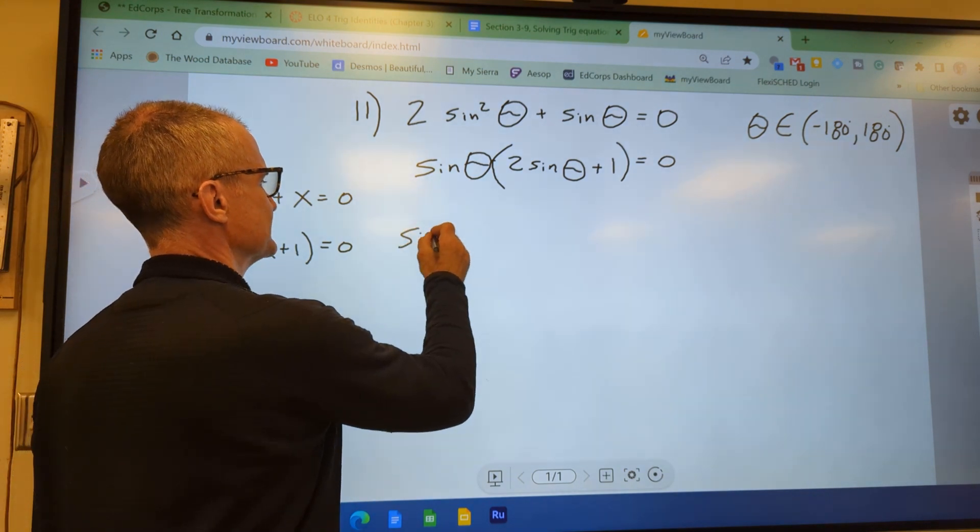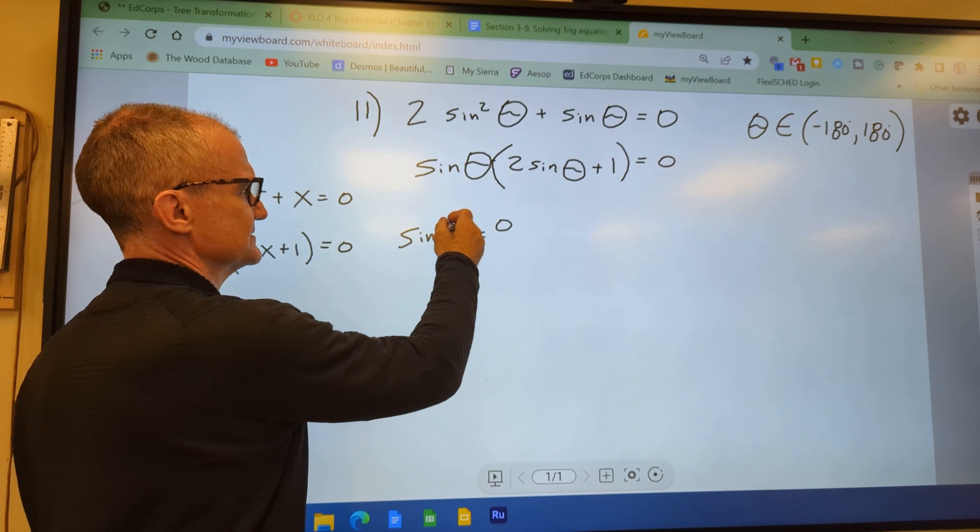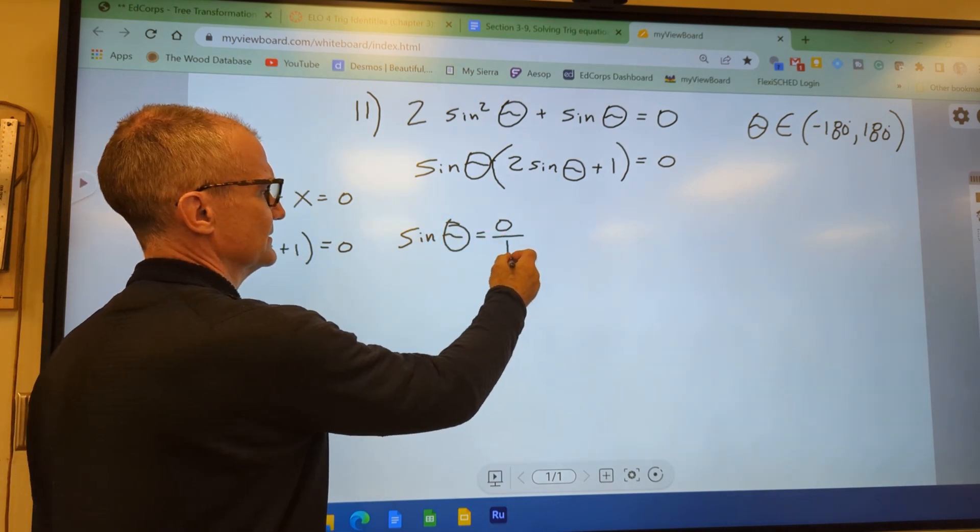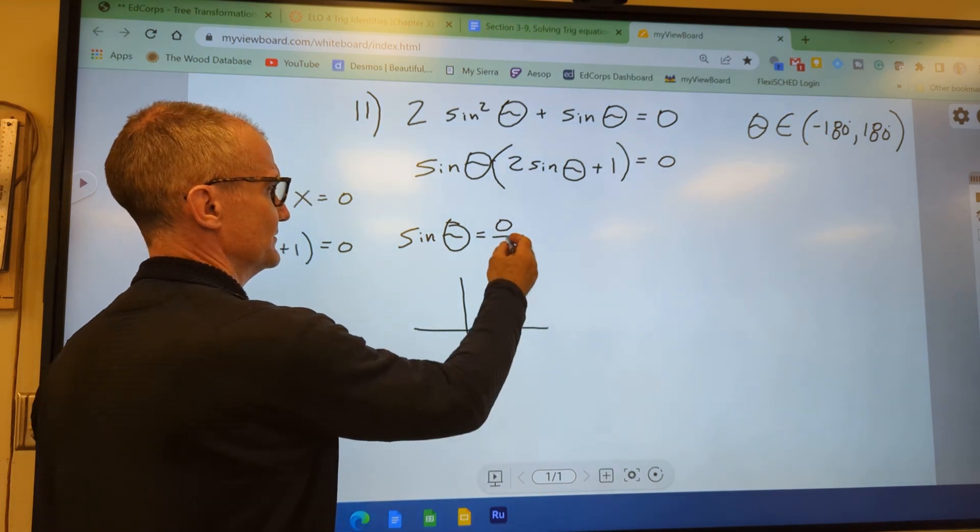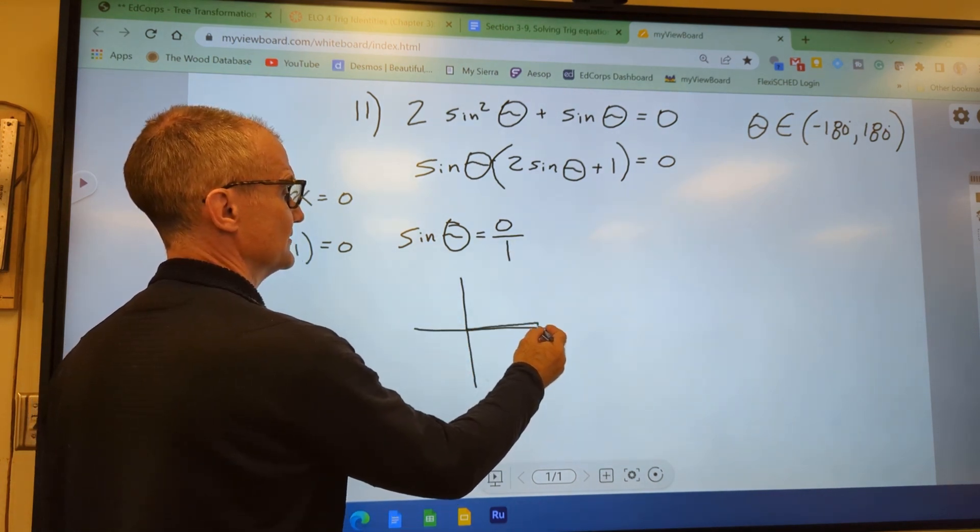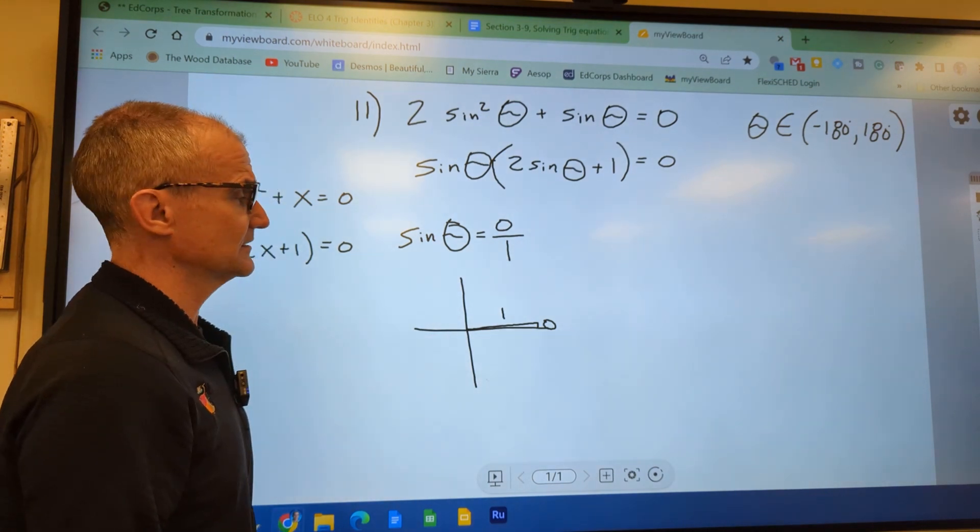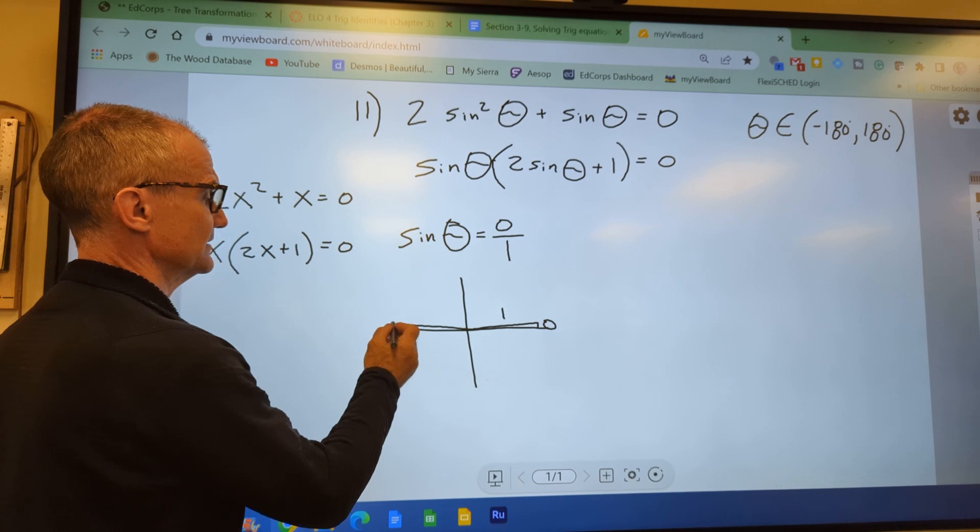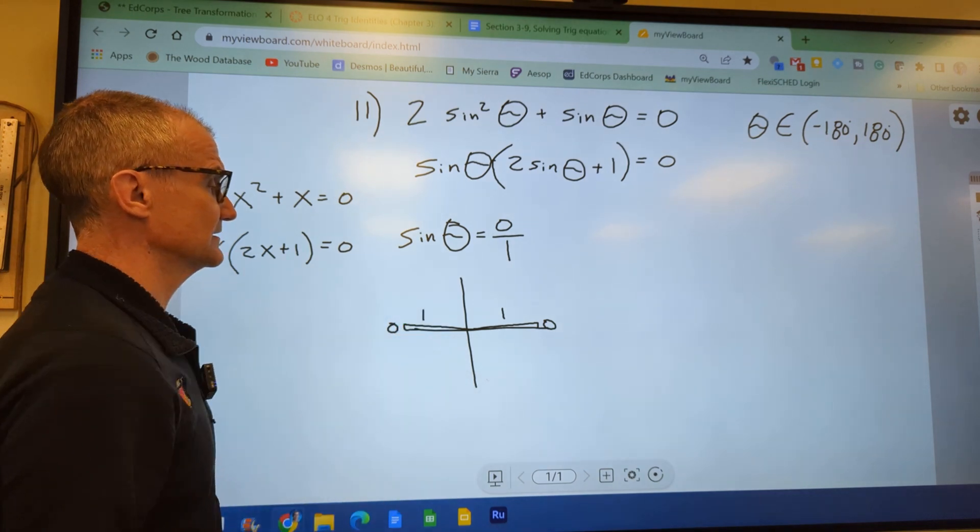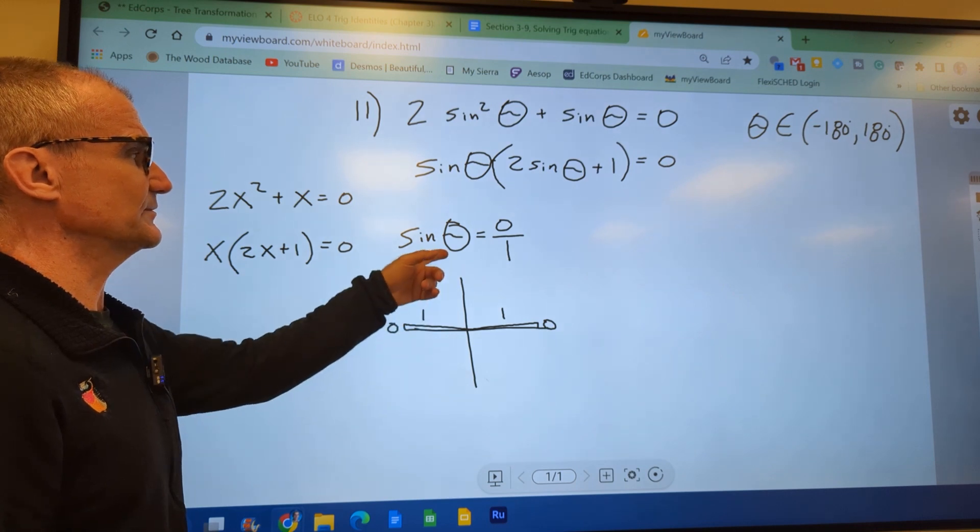So if sine of theta has to equal 0, don't forget that's always a fraction. That's the same thing as 0 over 1. What I'm saying here is my opposite is 0, my hypotenuse is 1. That could happen here at 0 degrees. It could also happen here at 180 degrees. All right, so those are my two reference triangles from here.